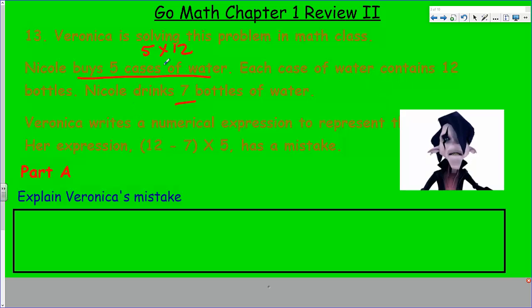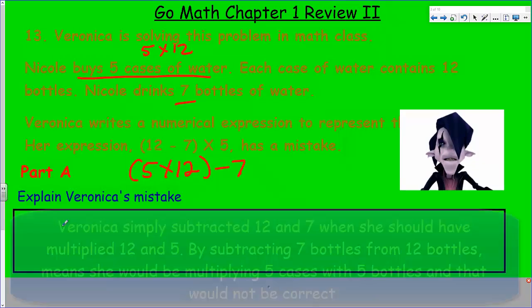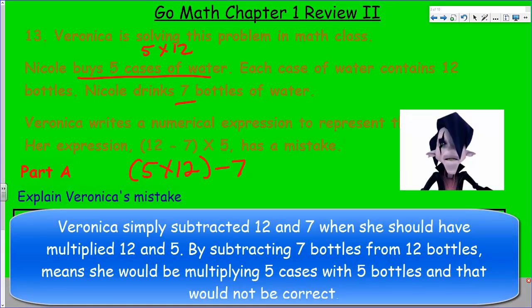Explain Veronica's mistake. Let's take a closer look. She's buying five cases of water, each case contains 12 water, so right there you should be thinking five times 12. Nicole drinks seven bottles of water, assuming from that amount. Veronica put 12 minus 7 times 5. I'm kind of wondering why she put 12 minus 7, because if she drank seven bottles of the water, it seems to me she would have five times 12 minus that seven bottles.